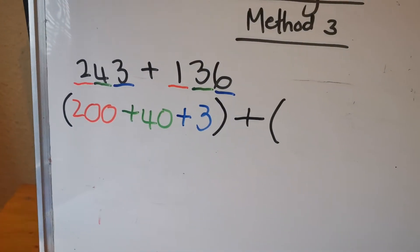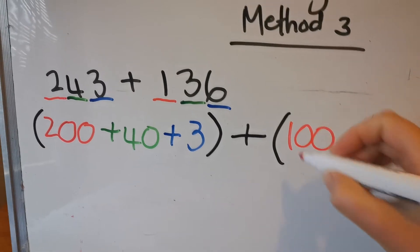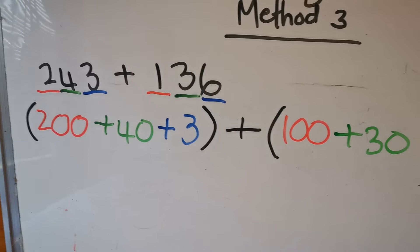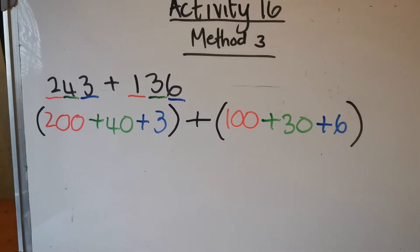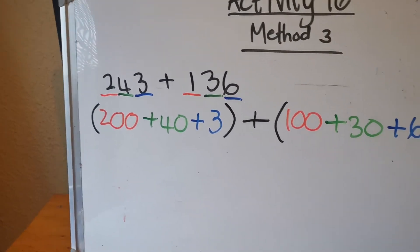And in the other brackets you're going to write 100 plus 30 plus 6. And you can write it in the different colors if you'd like so that you can understand it better.